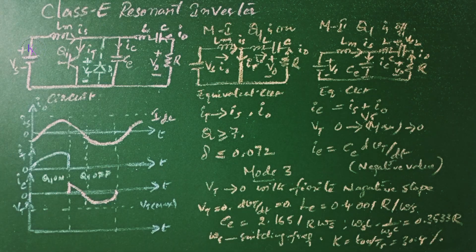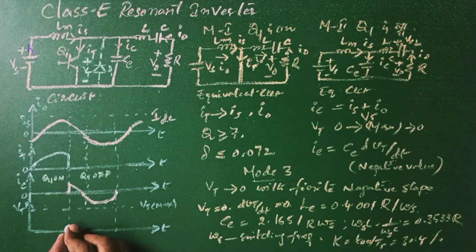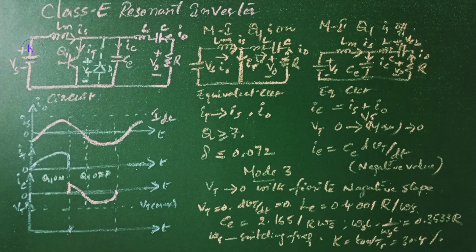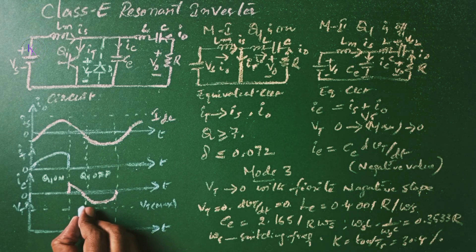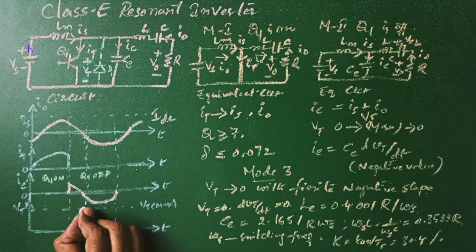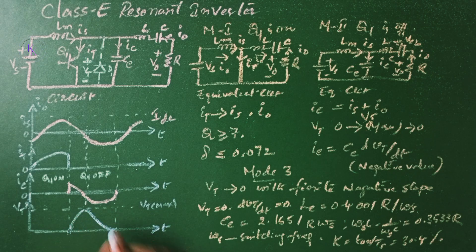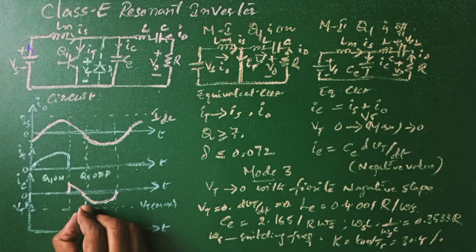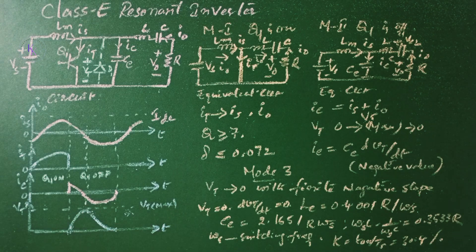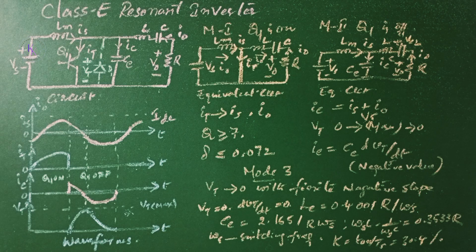And we know that the transistor is going to turn off when VT becomes 0, and then it will reach to a maximum value then starts decreasing to 0. This value is nothing but VT max. These are the waveforms for Class E resonant inverter.